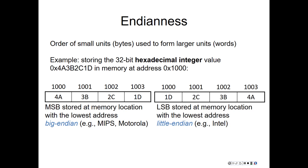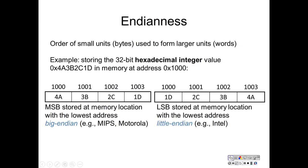In a little-endian architecture, 1D is stored at 1000, and then the next least-significant byte, 2C, is stored at 1001, then 3B at 1002, and 4A at 1003.